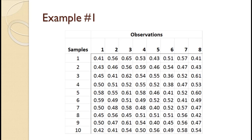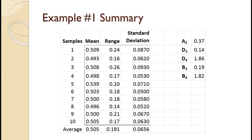The slide shows a set of data for diameter of holes drilled by an industrial drill press. There are 10 samples and each sample has a size of 8. It is known from previous experience that the standard deviation of the process is 0.064 inch. A summary of the data is shown on the slide — this summary is all we need to construct the control charts. Also shown are the control chart factors for a sample size of 8 that we will need.